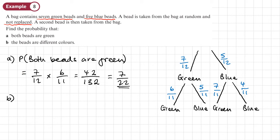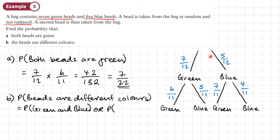So the probability both beads are different colors. So if the beads are going to be different colors, it means either that I'm going to get a green followed by a blue. So probability of green and blue. Or it's the probability that it's blue followed by green. So probability blue and green.